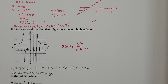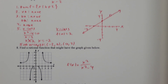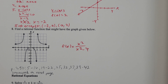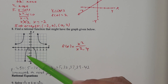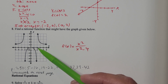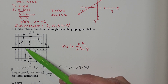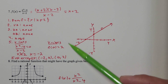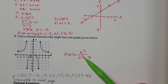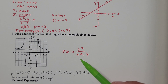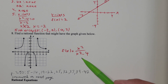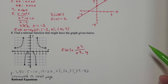Part 8: they want us to find a rational function that might have the graph given below. The idea is to use the information from the six steps we've been doing to sketch these graphs, and we're going to build a function — I'll call it f of x. I notice this function has two vertical asymptotes at x equals 2 and x equals negative 2, which means 2 and negative 2 can't be used in the denominator. So I'm going to want x squared minus 4 in the denominator.